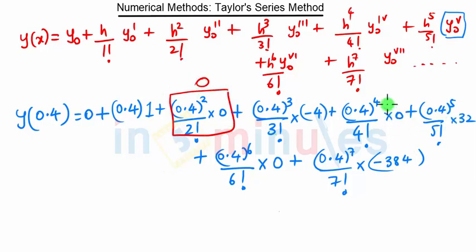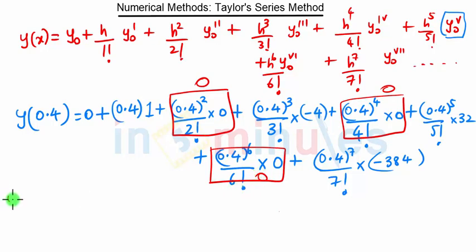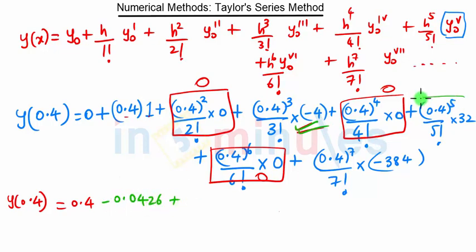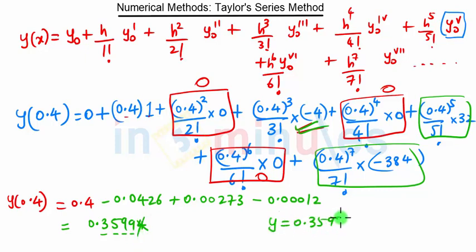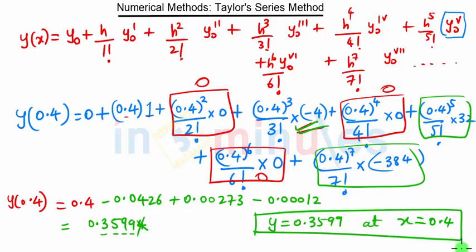The zero-derivative terms become 0. So y(0.4): the first term is 0.4 times 1, which is 0.4. The next non-zero term turns out to be 0.00273, and another term turns out to be 0.00012. When we add all these, we get 0.35994, but since we need only 4 decimal places, we round to 0.3599. So y equals 0.3599 at x equal to 0.4. This is how we solve a problem on the Taylor series method in numerical methods. Stay tuned for our future lectures.